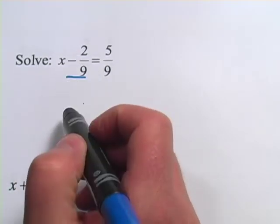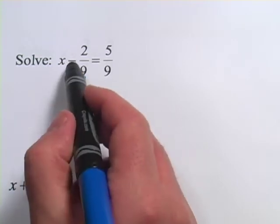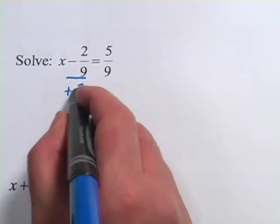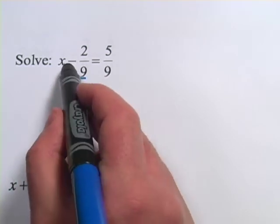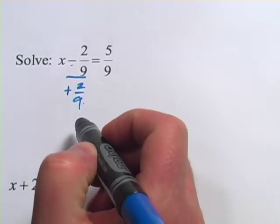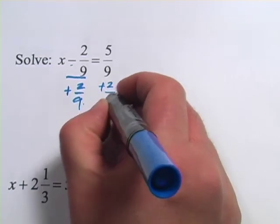You always do the opposite. So while in the last one we subtracted, this one we want to add 2 ninths. The reason we add 2 ninths is because it's a negative 2 ninths we have up here. And then we have to do the same thing to both sides.